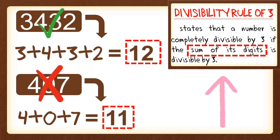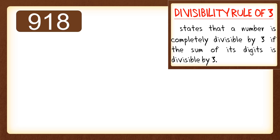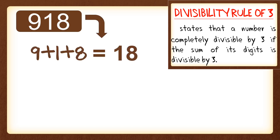Let's try two more numbers. For 918, we get the sum of its digits: 9 plus 1 plus 8, which equals 18. Since 18 is a multiple of 3, 918 is also divisible by 3.